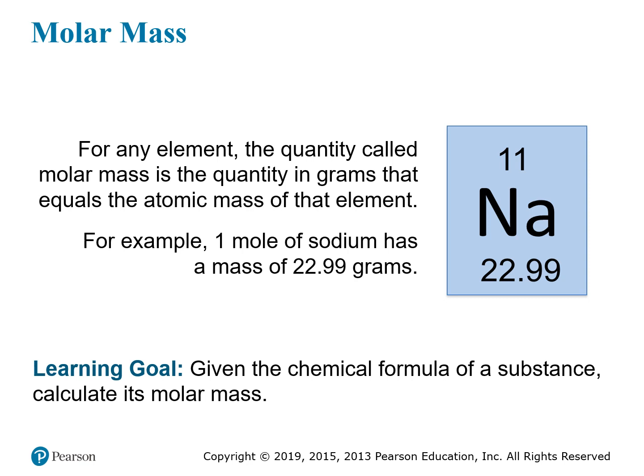Because of the way the mass units, the mole, and Avogadro's number are all defined, for any element, the molar mass is the quantity in grams that equals the atomic mass of that element. For instance, sodium has an atomic mass of 22.99, so one mole of sodium weighs 22.99 grams. We're used to thinking about the atomic mass in the periodic table as the mass of one atom in atomic mass units, but it is also the mass of one mole of atoms in grams.